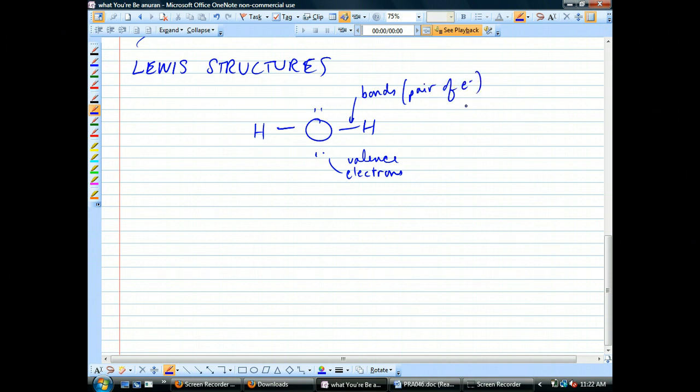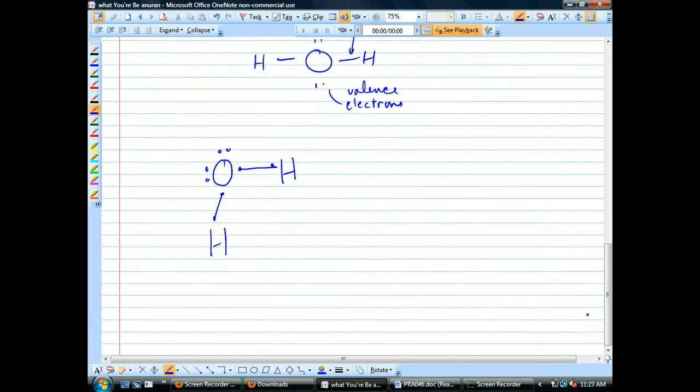Now, by the old method, or what you might have learned in middle school, here's what I mean. You might have done something like this, where you would start by drawing a picture of oxygen like this with six valence electrons. Right? And then you might have had a picture of hydrogen like this, and another picture of hydrogen like this. And then you might have done something horrendous like this. Okay?